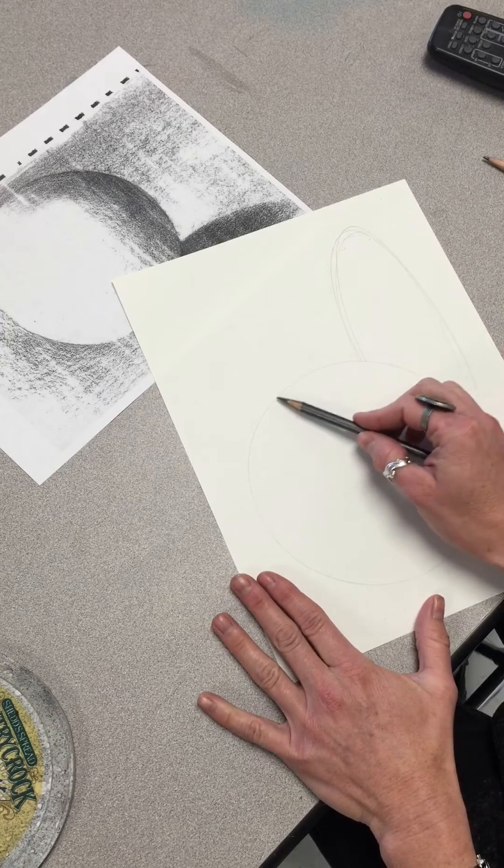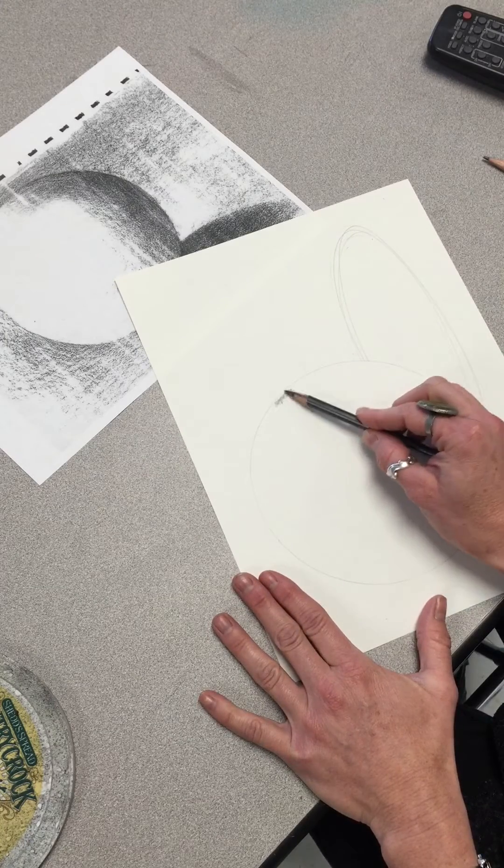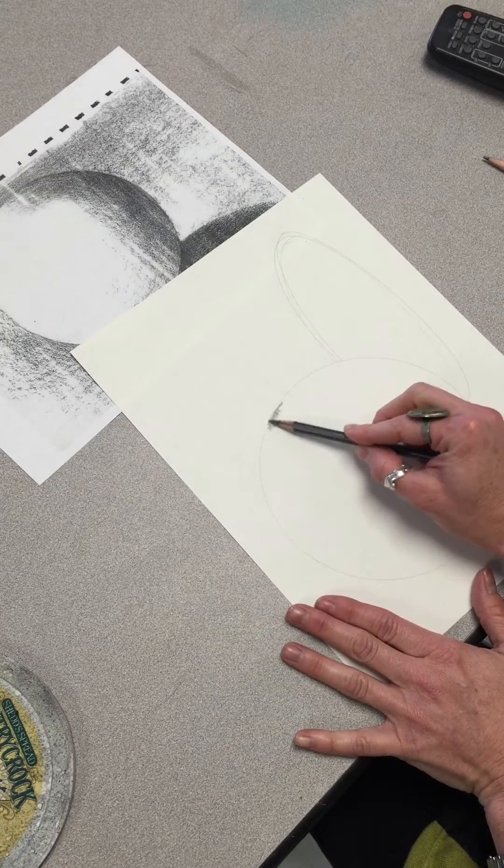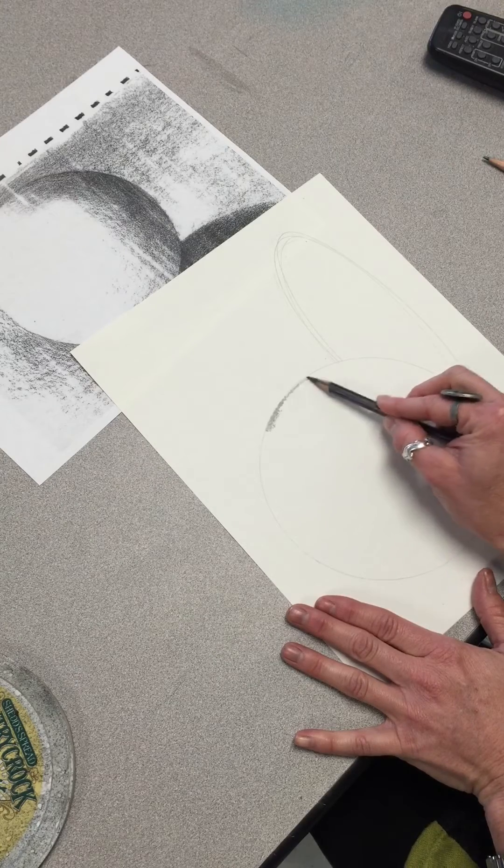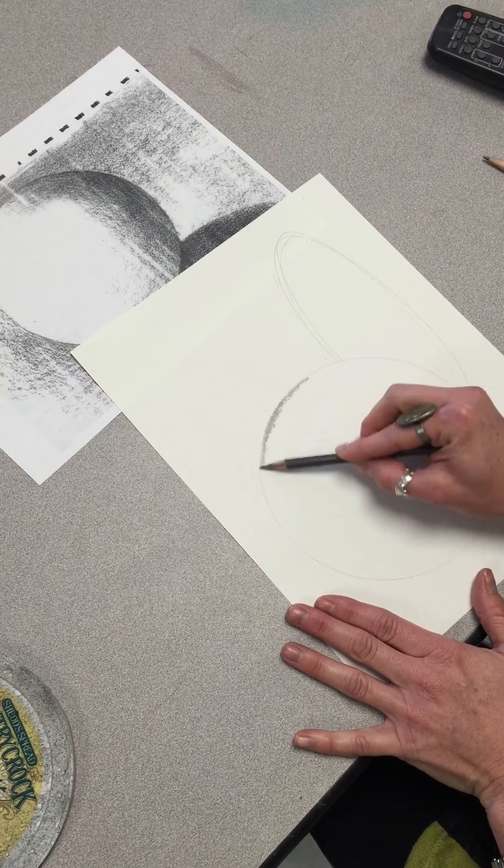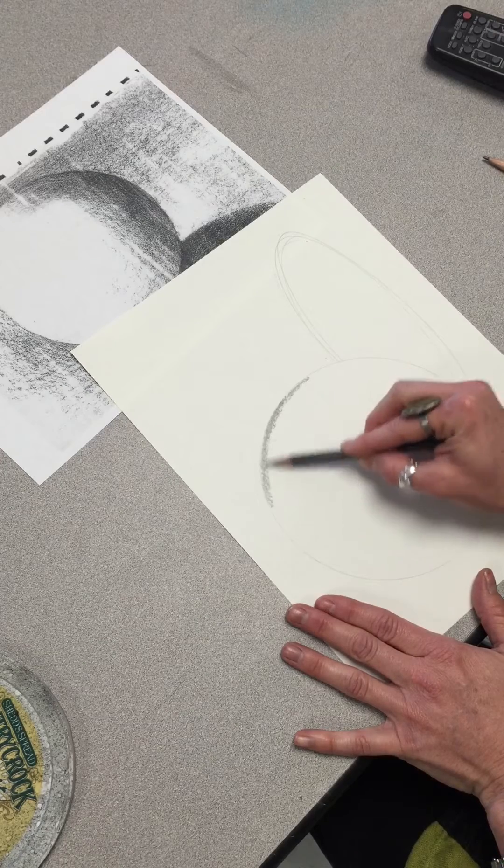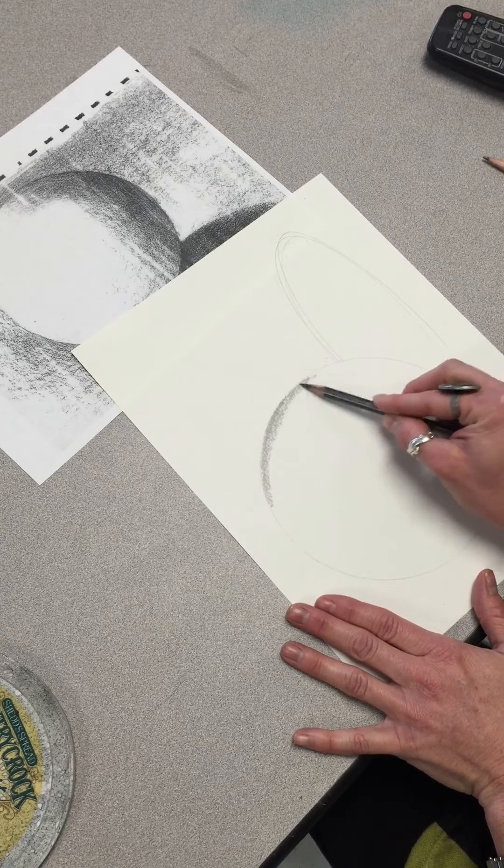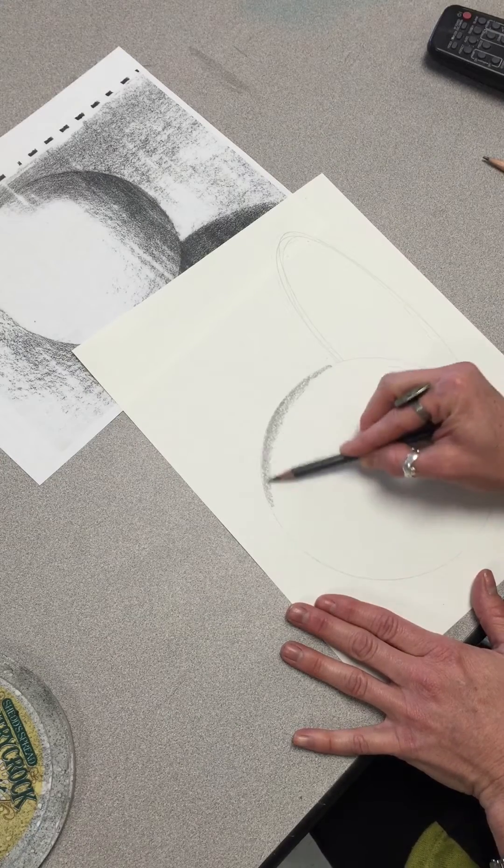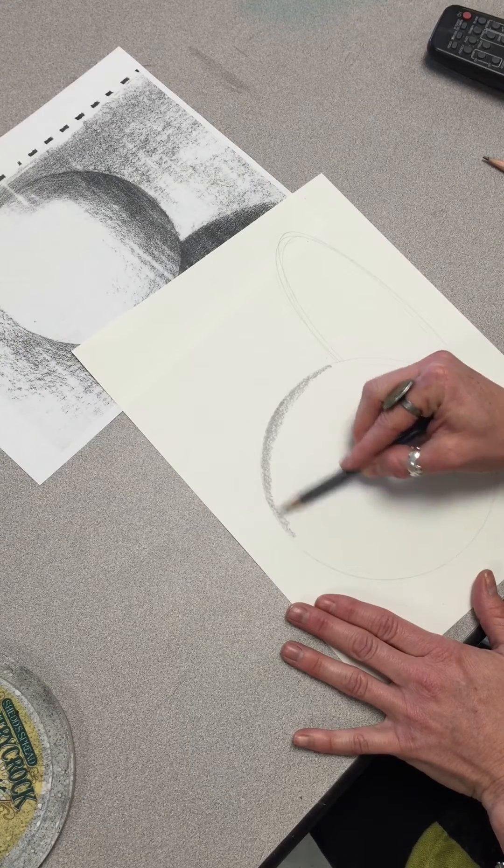I'm going to put my hand inside the sphere. I'm still holding my pencil sideways, and I'm going to start adding a dark value. It's going to gradually get lighter as it goes inward into the sphere.